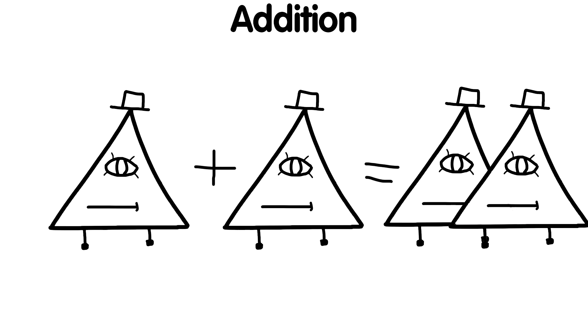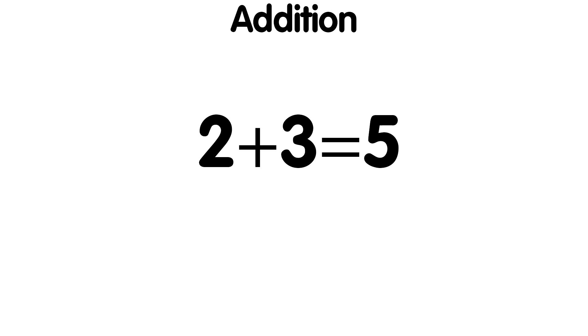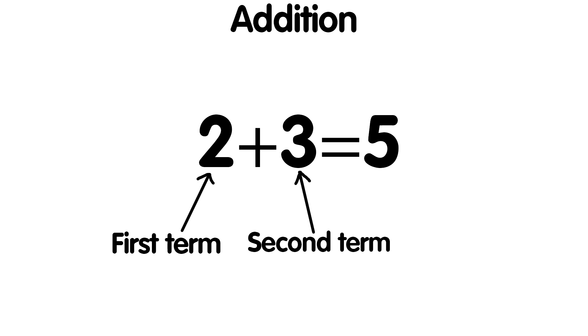Operations with numbers. Addition is an operation that combines two or more numbers into one. For example, 2 plus 3 equals 5. Here 2 is the first summand, 3 is the second summand, and 5 is the sum — that is the result. Remember that changing the places of the summands does not change the sum.